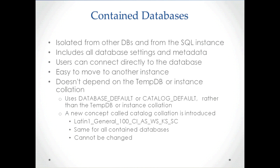Contained databases don't depend on the tempdb or instance collation. For regular uncontained databases, when you create temp tables, they use the collation of the tempdb. For contained databases, though, it uses its own database collation. For things like variables and cursor names, an uncontained database uses the collation of the SQL instance, but in a contained database it uses a new concept called a catalog default. A catalog collation is new in 2012 — it uses a Latin1 collation that is the same for all contained databases and can't be changed.